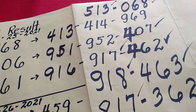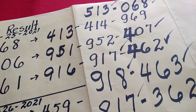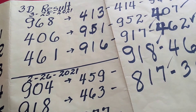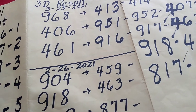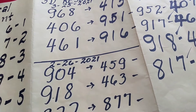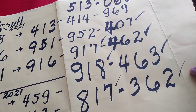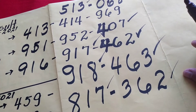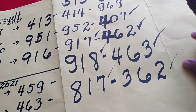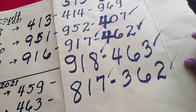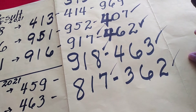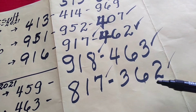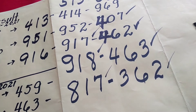Ang 9, 1, 8. Ito ay lumabas noong February 26. Baka ito ay palabasin nila ngayon: 9, 1, 8. Ito ay magiging 4, 6, 3. O di kaya yung 8, 7, 7 magiging 8, 1, 7. At saka yung katumbas ay 3, 6, 2.